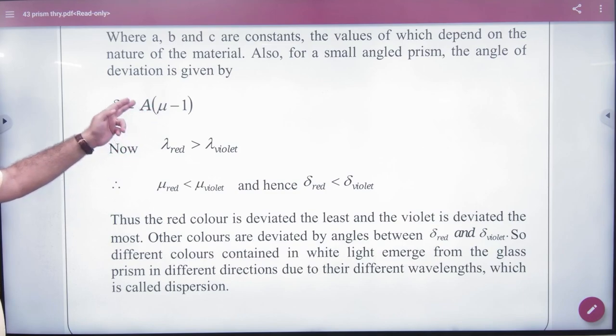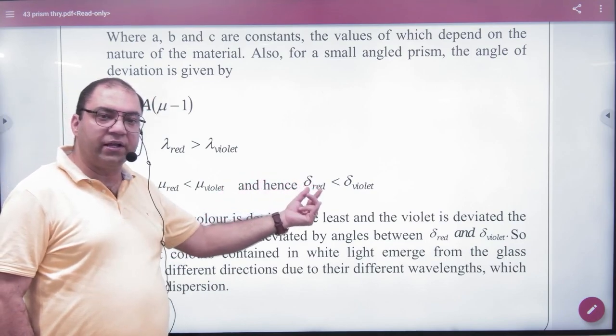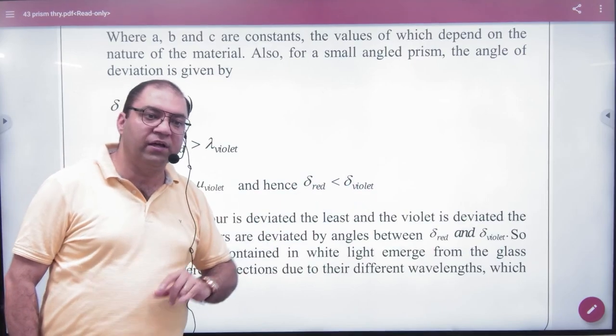Obviously, the delta will be less. If mu is less, then the delta will be less. That's why the red deviation is the most short wavelength of red and the violet is the most short wavelength.